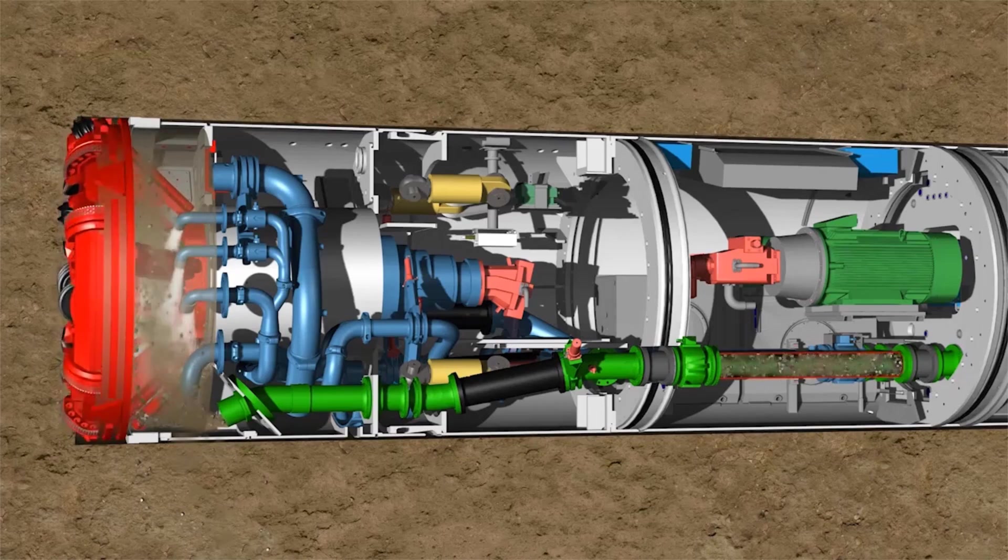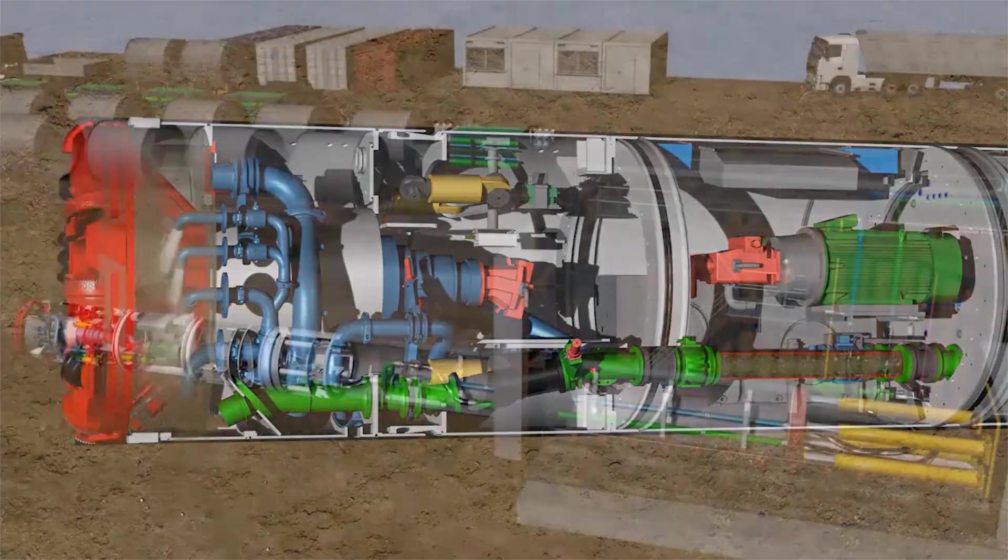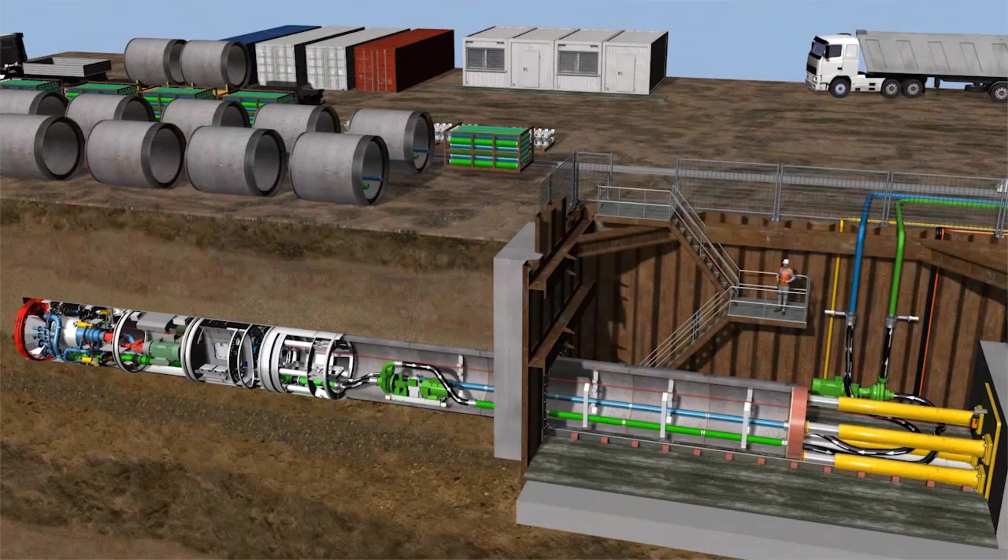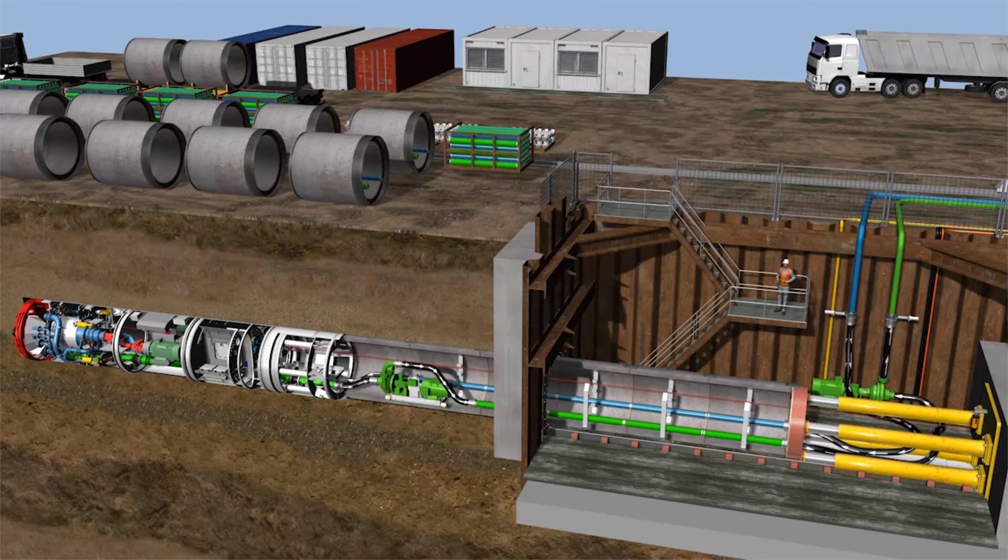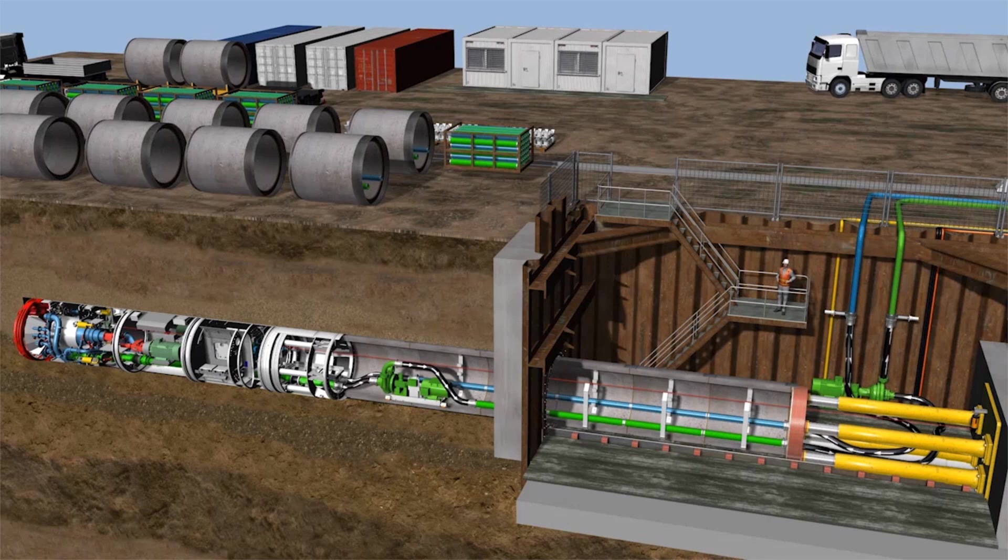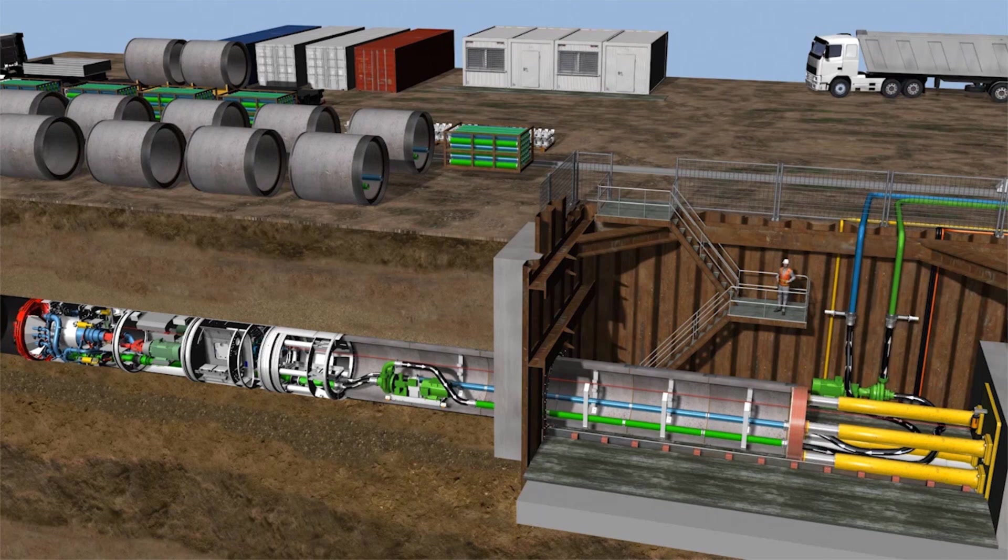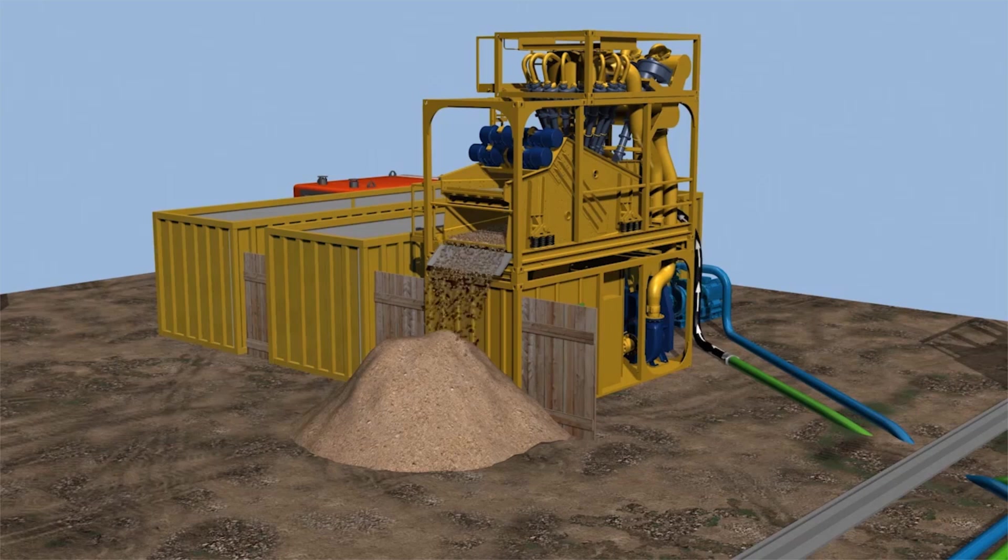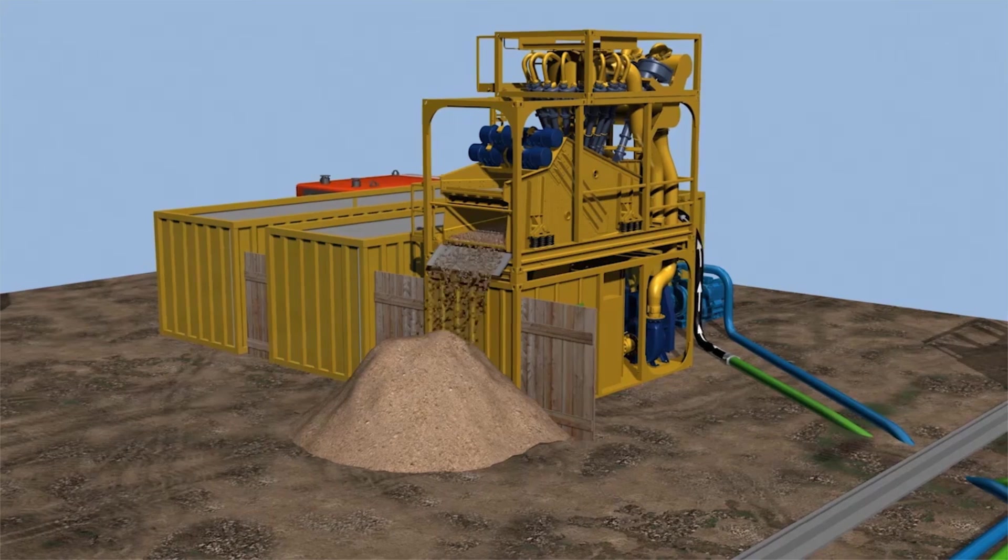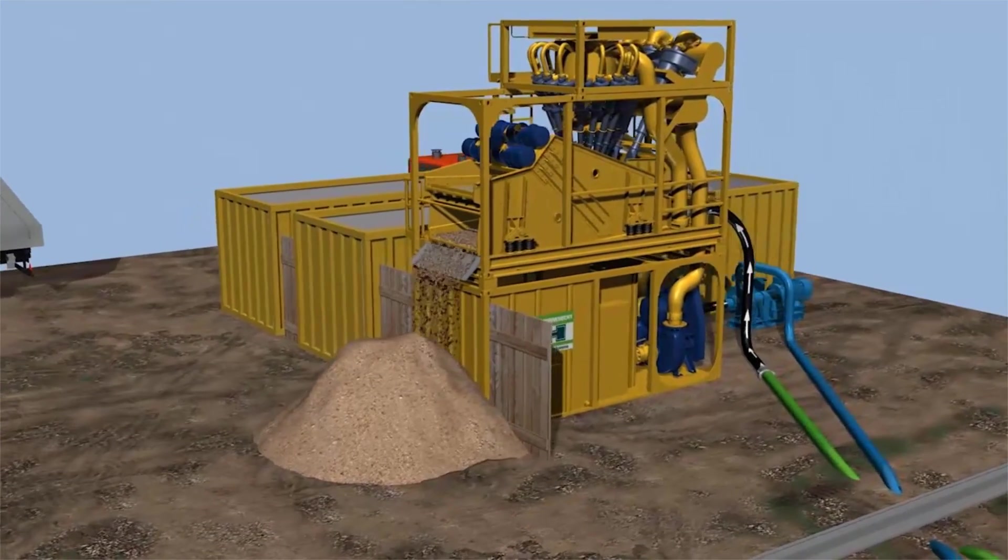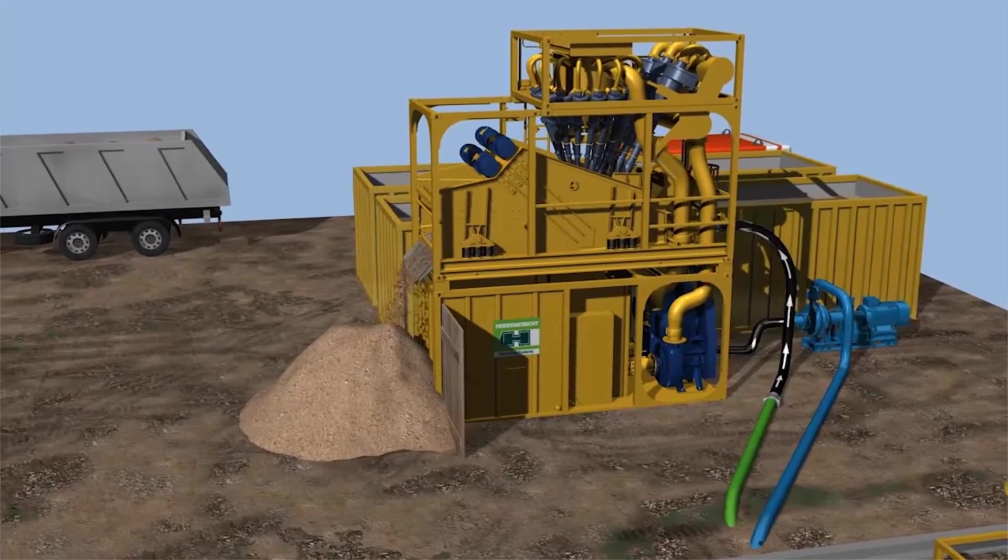Together with the support fluid, the excavated soil is suctioned by the pump and pumped through the slurry line to the launch shaft. Another pump transports the material to the surface to the separation plant. There, a multi-stage separation process separates and removes the excavated material from the support fluid, and the clean suspension is fed back to the machine again.